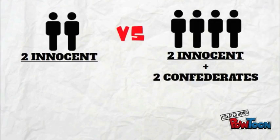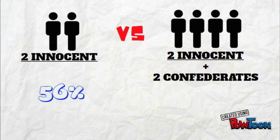In both situations, the innocent bystanders' reactions were observed and it was found that the two innocent bystanders in the group of two were more likely to stop the theft, as compared to the two innocent bystanders in a group of four.